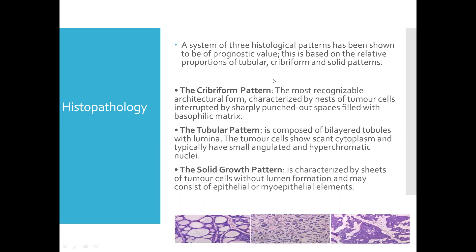The cribriform pattern is the most recognizable architectural form, characterized by nests of tumor cells interrupted by sharply punched-out spaces filled with basophilic material. The tubular pattern is composed of bilayer tubules with lumina; tumor cells show scant cytoplasm and typically have small, angulated, and hyperchromatic nuclei. The solid growth pattern is characterized by sheets of tumor cells without lumen formation and may consist of epithelial or myoepithelial elements.